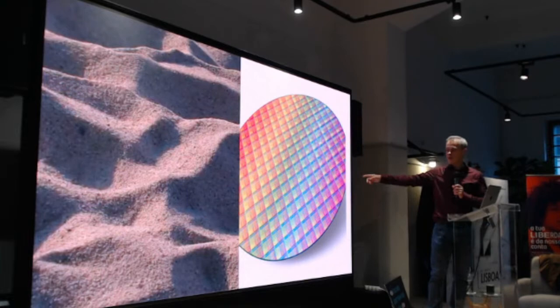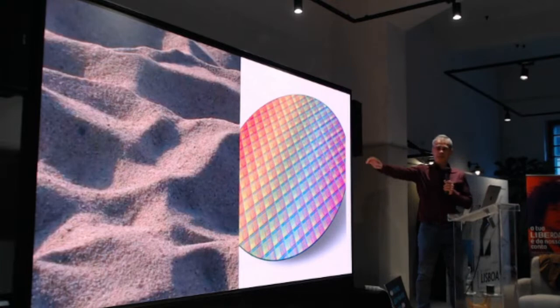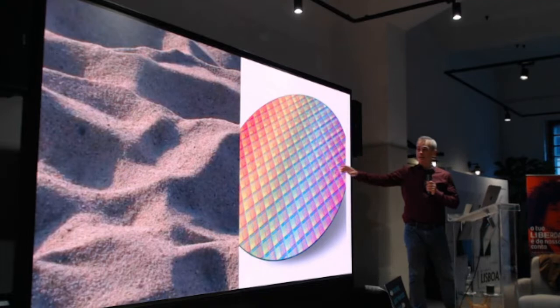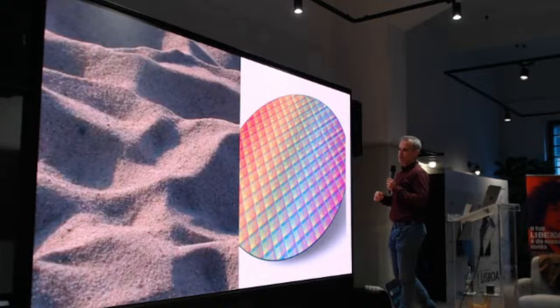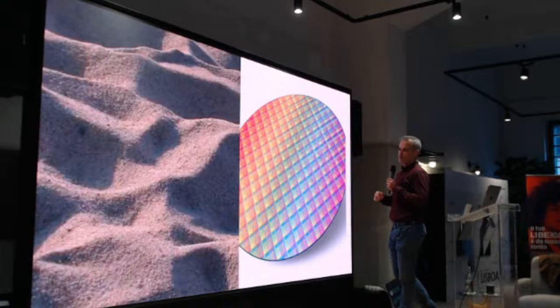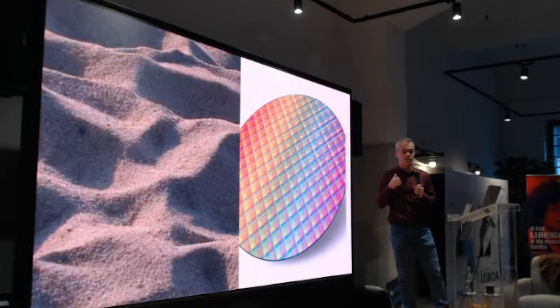Do you know what this picture on the left is? It's a silicon wafer with several integrated circuits made of billions of transistors — that is where everything starts. From the raw material to the final product takes many weeks and very complex processes. It involves extremely clean rooms with almost no particles inside, and I'll explain why that is important.